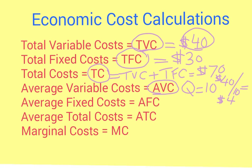Average fixed cost is the same idea — total fixed cost divided by the number of products we make. Our total fixed cost is $30 and we're making 10 products, so 30 divided by 10 gives an average fixed cost of $3.